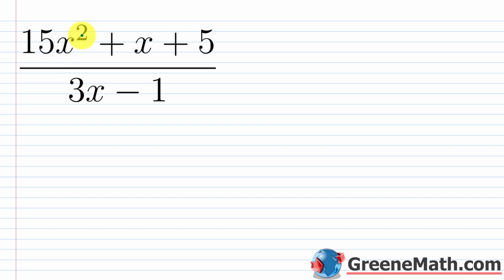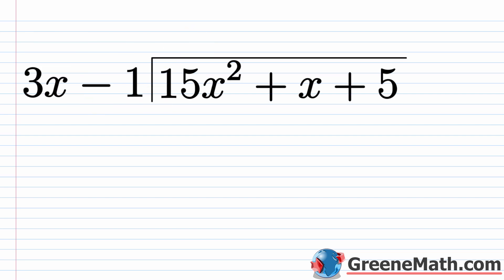So here we have something like 15x squared plus x plus 5 over 3x minus 1. The issue here is that you have this 3 as the coefficient of x, and we want something of the form x minus k. So before I show you how to do this, let's go through this quickly with polynomial long division, just so we know what to expect.